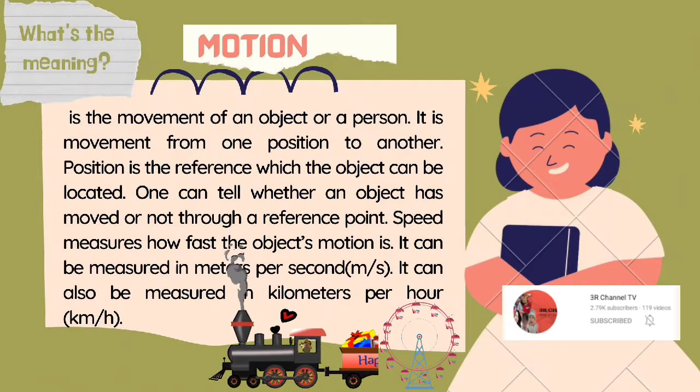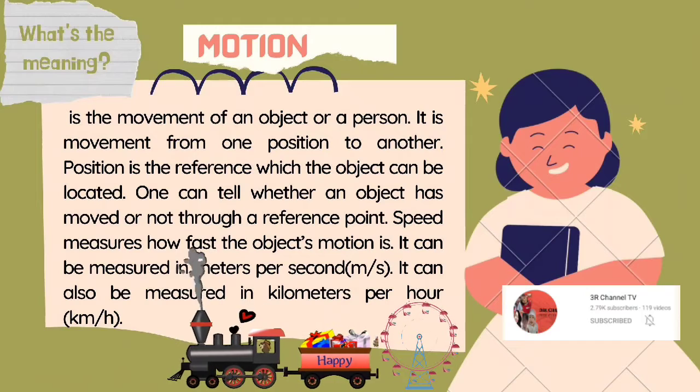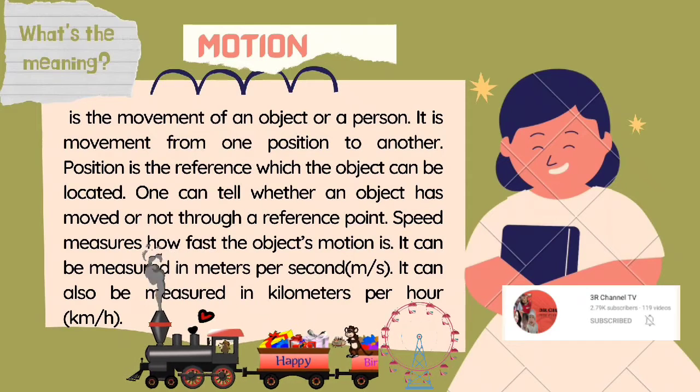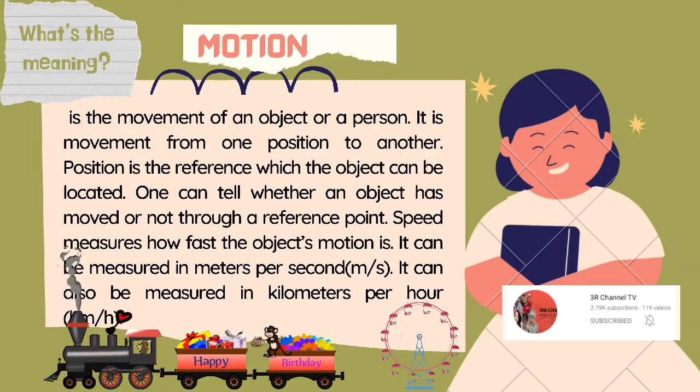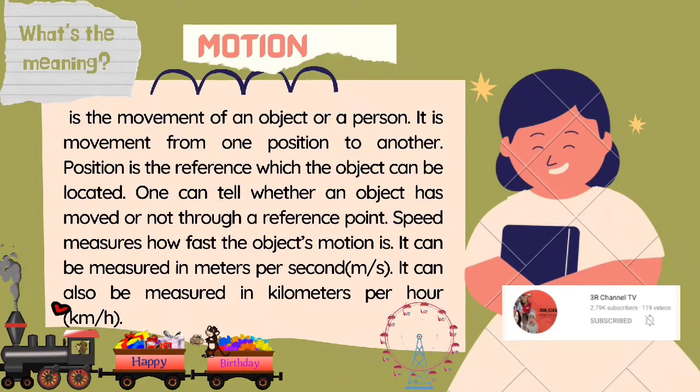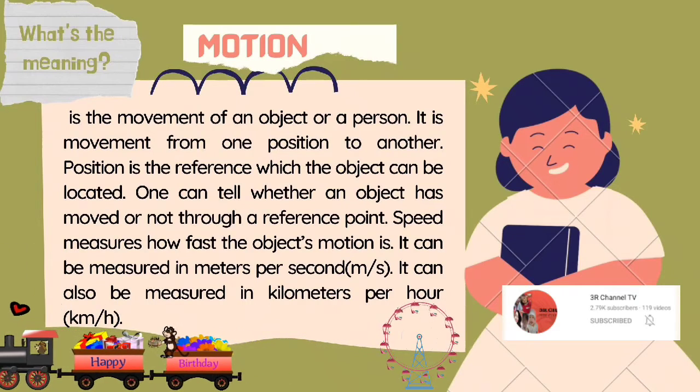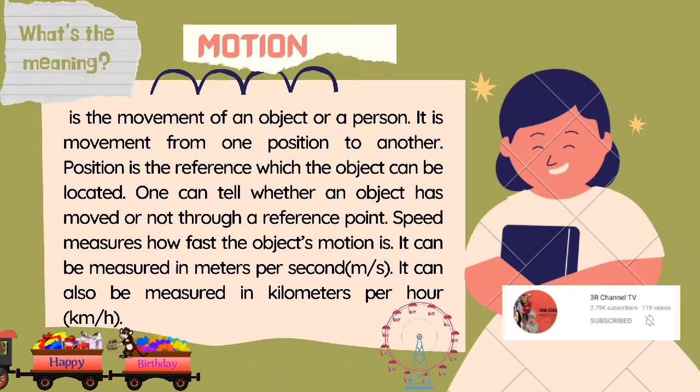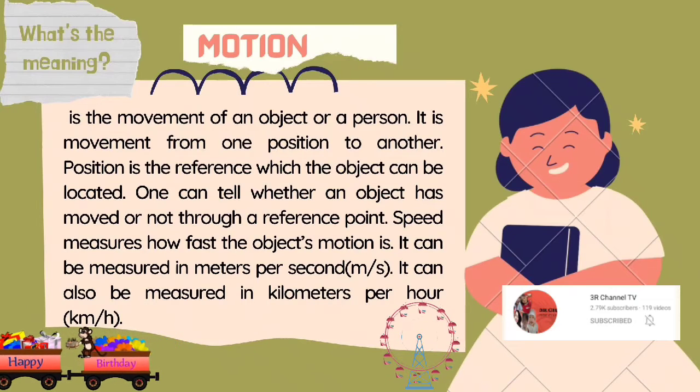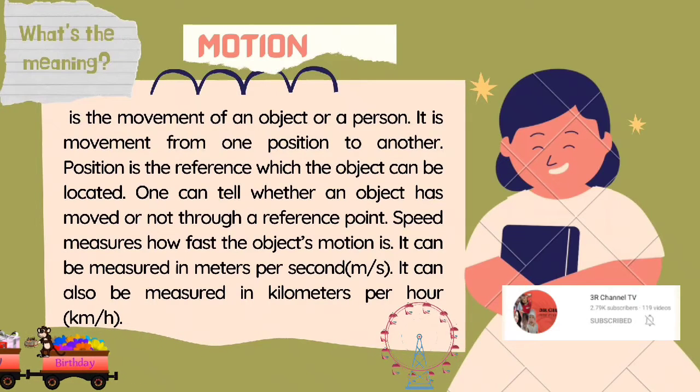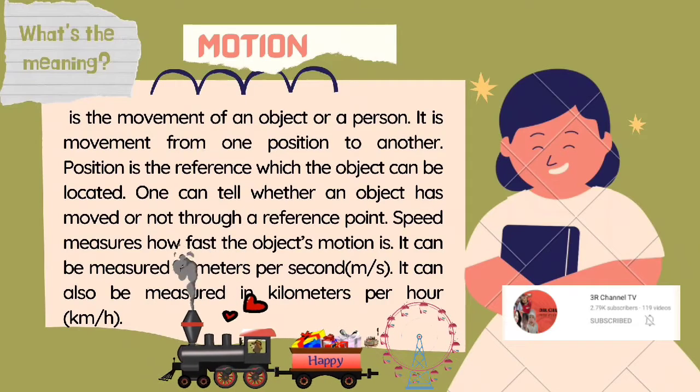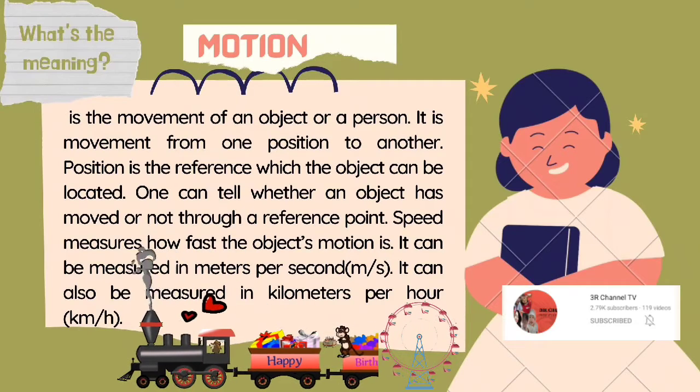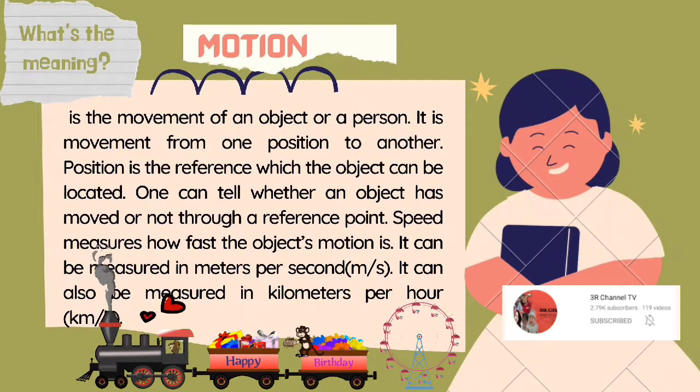Let us know the meaning of motion. Motion is the movement of an object or a person. It is movement from one position to another. Position is the reference which the object can be located. One can tell whether an object has moved or not through a reference point. While the speed measures how fast the object's motion is. It can be measured in meters per second. It can also be measured in kilometers per hour.